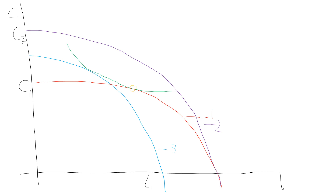Let's call this point X and this point Y. What happens is: when there is an increase in technology — z goes up — as a result of the increase in technology, there is going to be an increase in MPN, that is the marginal productivity of labor is going to increase, which means there is a corresponding increase in wage.